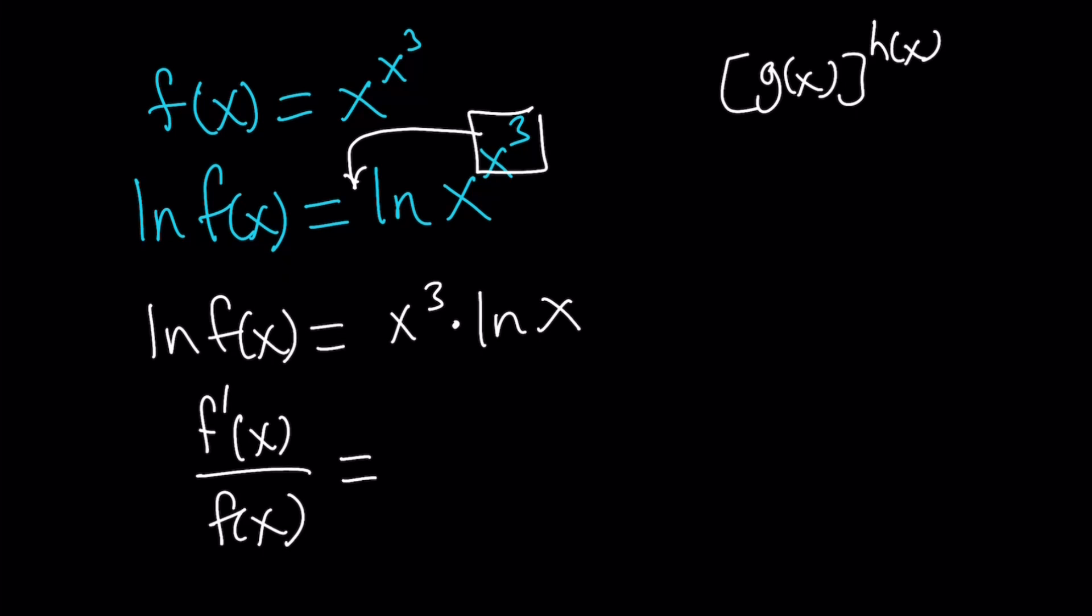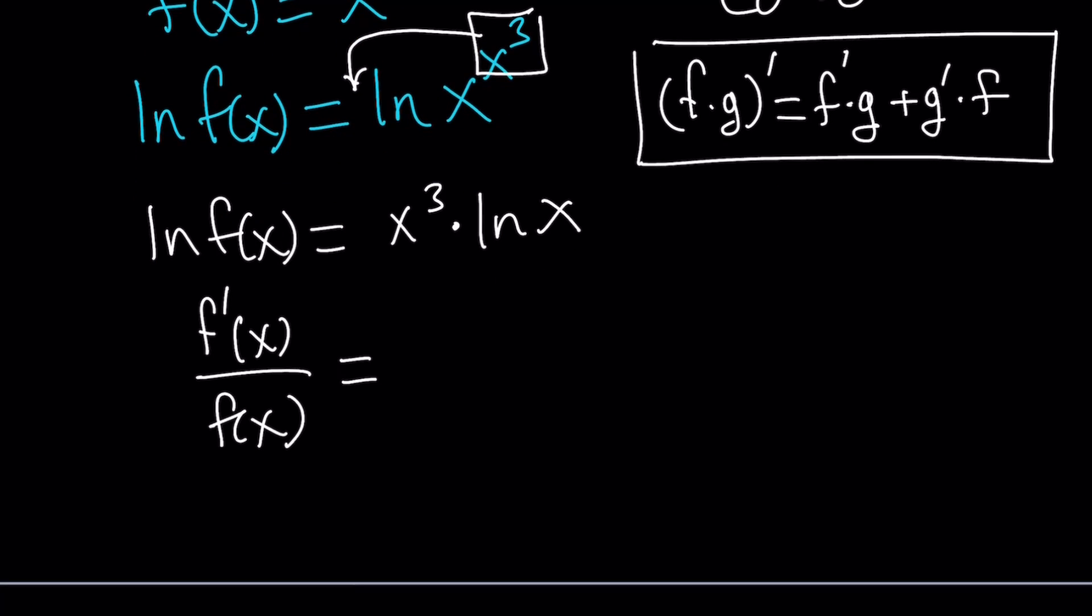On the right-hand side, we have the product property. And the product property is like if you have f times g, like a product of two functions, its derivative is going to be the derivative of the first function times the second function plus the derivative of the second function times the first function. When I say the first function, the original one, not the derivative. So that is the product rule. A lot of rules for differentiation, but they're easy once you know them.